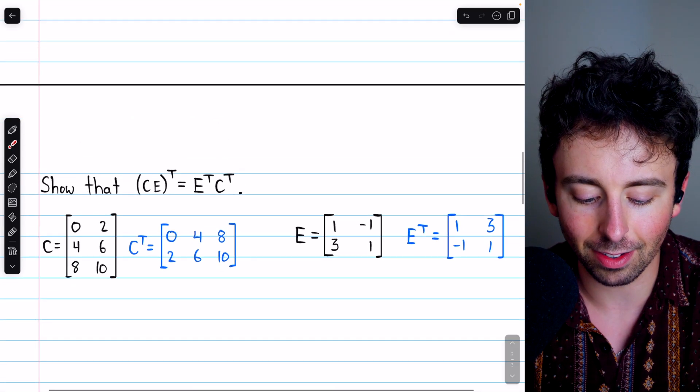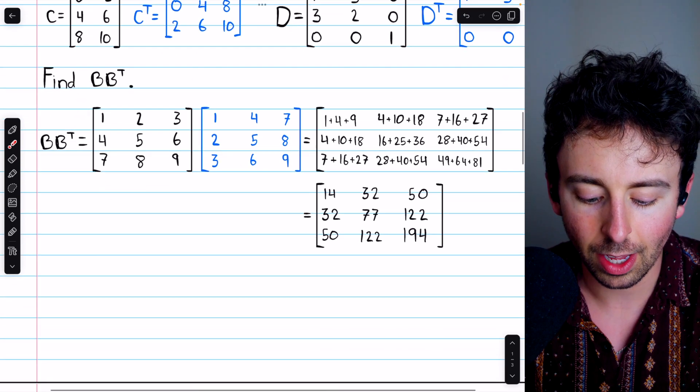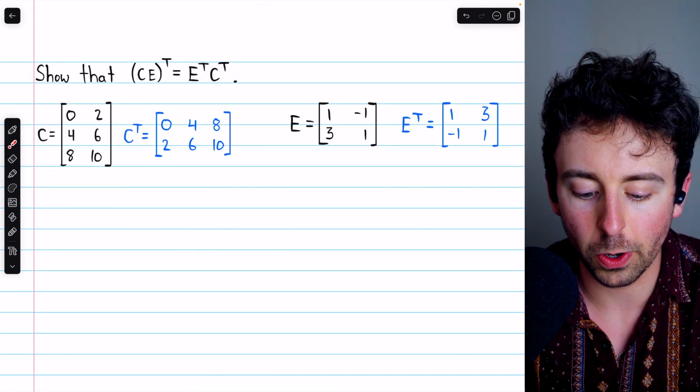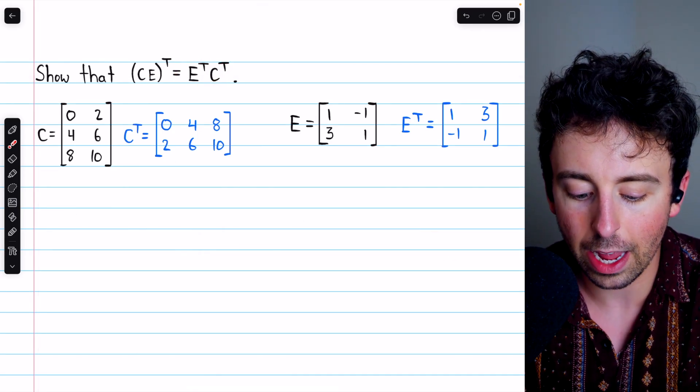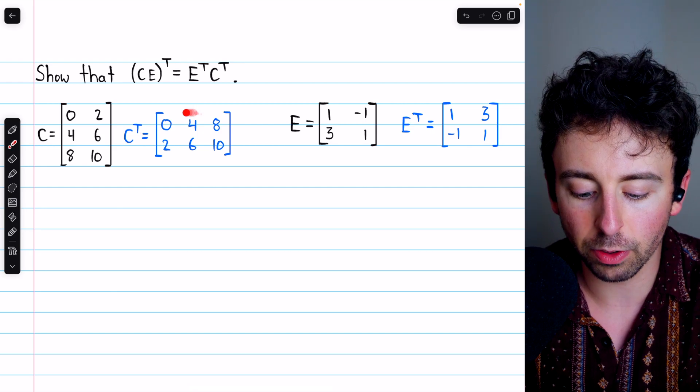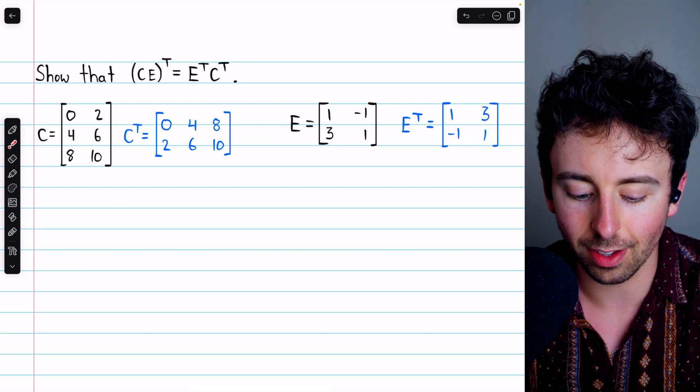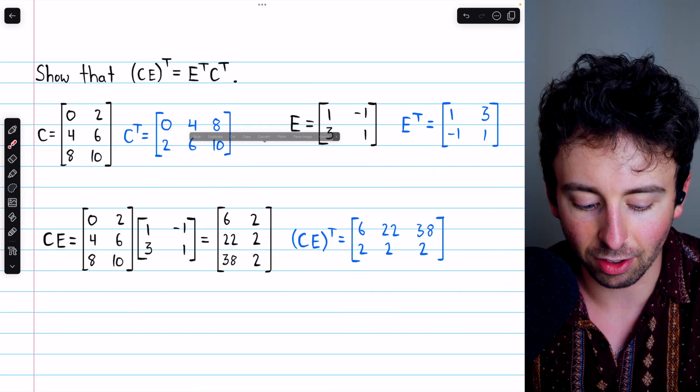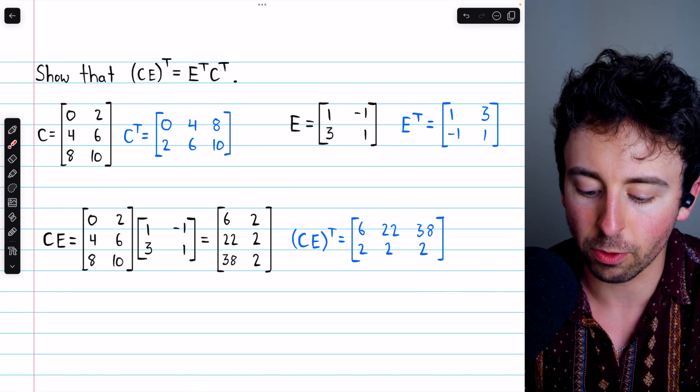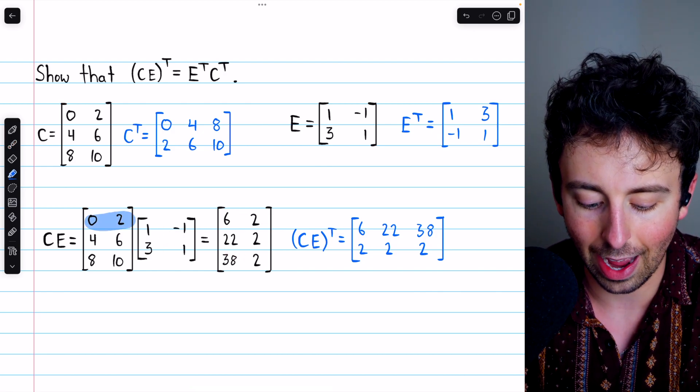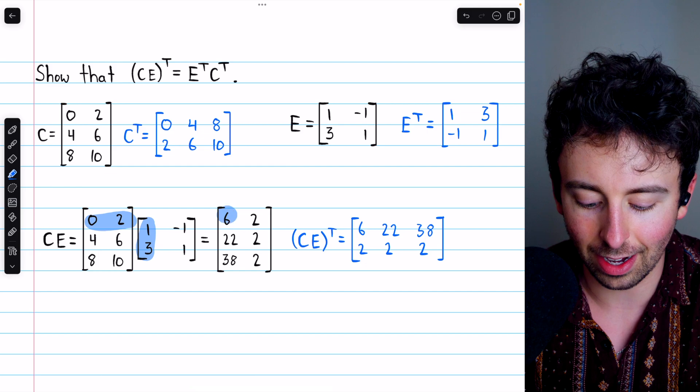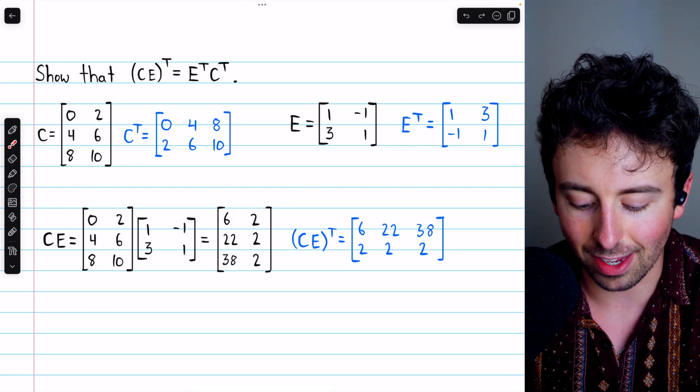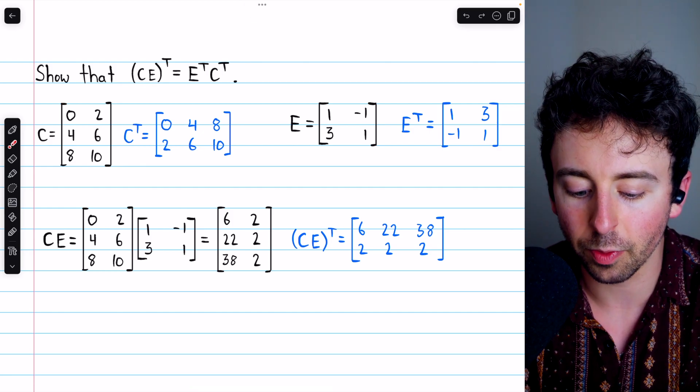Now the matrix C here is the same one that we had in the previous example, and E is a new matrix seen here. To verify that this is true, that the transpose of a matrix product works this way, we can take C transpose, which is this, and E transpose, which is this, and then do the computations. So CE is going to be this matrix C times this matrix E, which is this. We would have 0 plus 6 seen there, then we would have 0 plus 2 seen there, and so on. So that's CE, and then it's straightforward to find CE transpose.